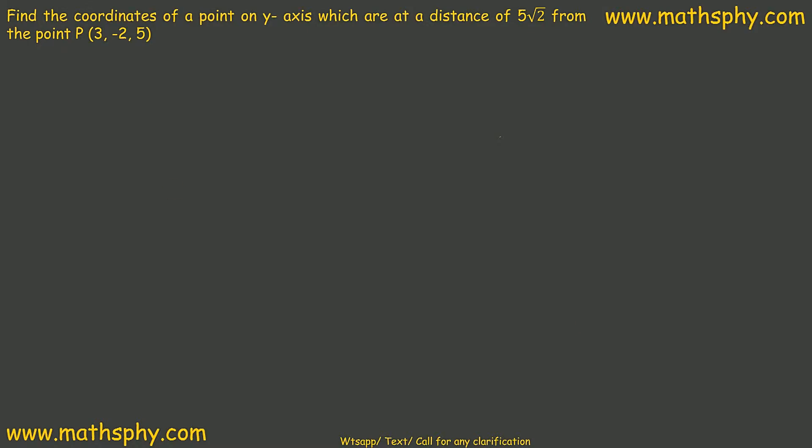Now this one here says find the coordinates of a point on y-axis which are at a distance of 5 root 2 from the point P which has coordinates 3, negative 2, and 5. Now a point which falls on y-axis will have x, y, and z coordinates.